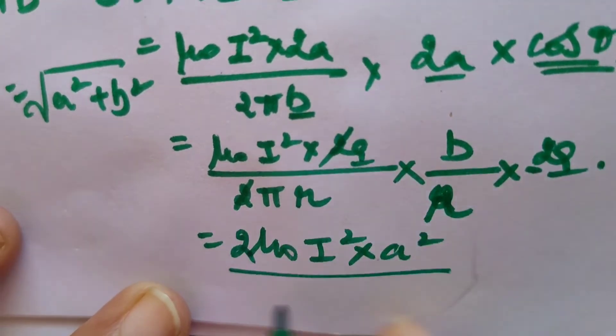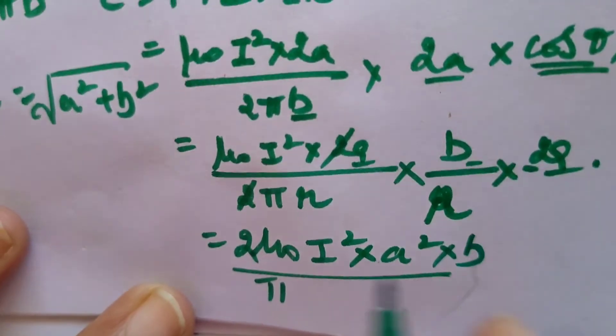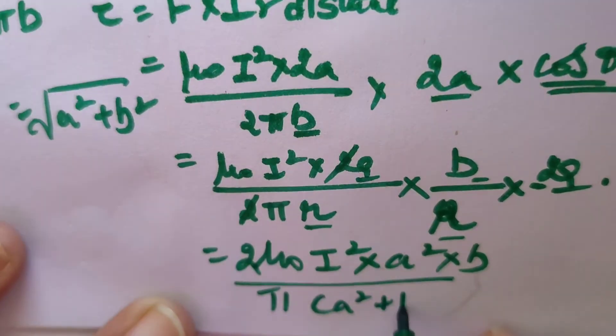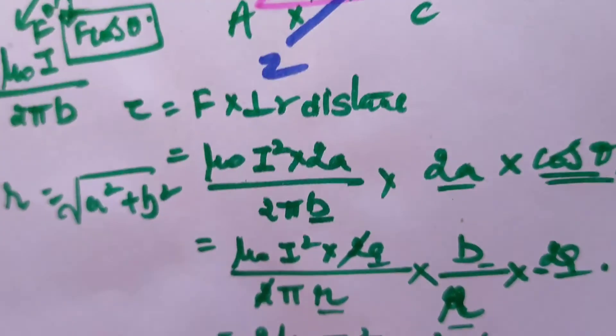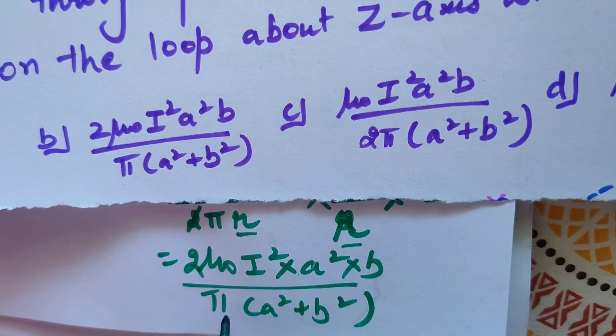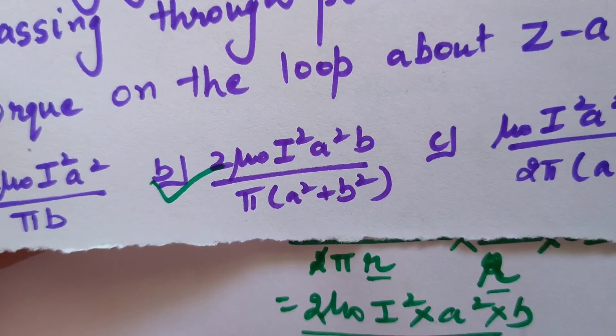This 2 will be here divided by π, this b will also be here, and r², which is going to be a² + b². If you see the options, the obvious answer is 2μ₀I²a²b/(π(a² + b²)). So this is the answer B. Thank you.